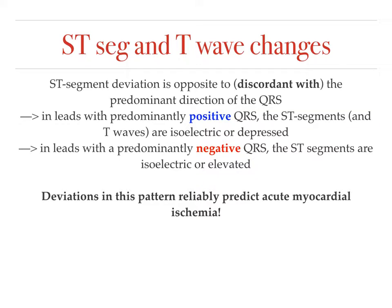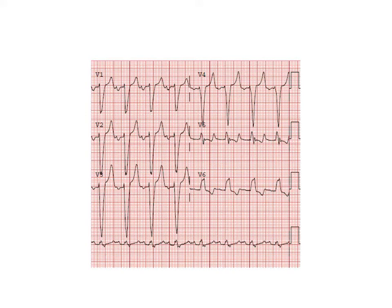Regarding ST segment and T wave changes in left bundle branch block: ST segment deviation should be discordant with the predominant direction of the QRS wave. If the QRS is negative, the ST segment and T wave should be positive. In leads with predominantly positive QRS waves, the ST segments and T waves are isoelectric or depressed. In leads with predominantly negative QRS, the ST segments are isoelectric or elevated. Deviations in this pattern can indicate acute myocardial ischemia.